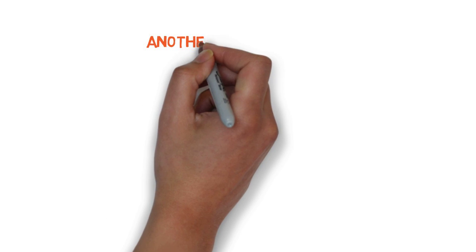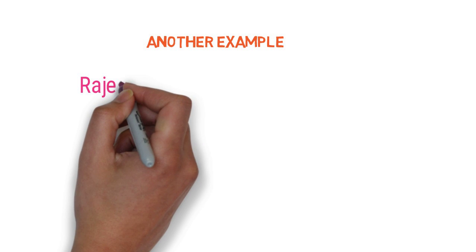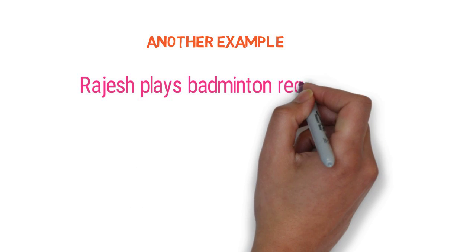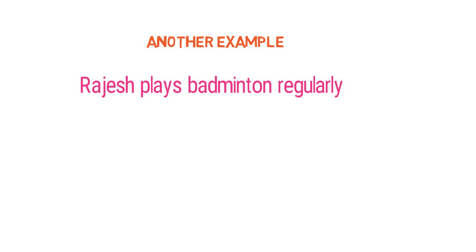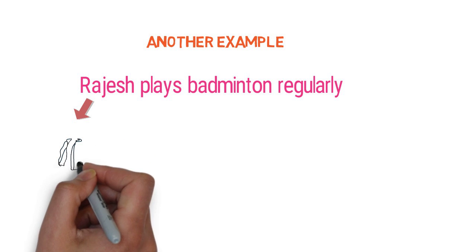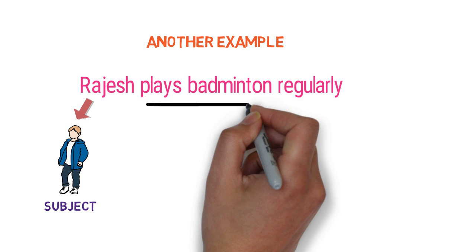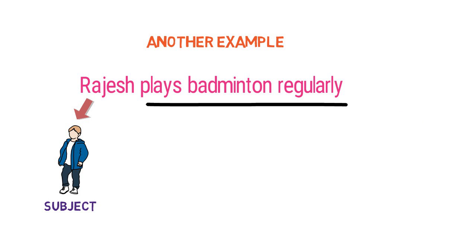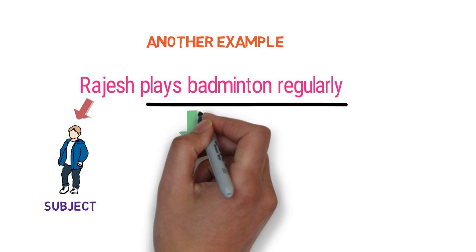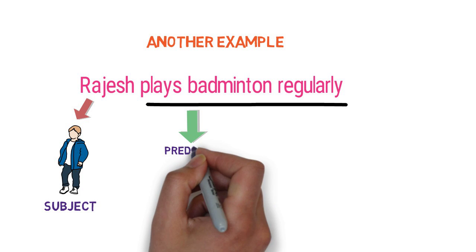Let's look into another example to make things even more clear. Rajesh loves playing badminton regularly. Here, what is the sentence about? It is about Rajesh. So Rajesh is the subject here. And what does Rajesh play regularly? Rajesh plays badminton regularly. So plays badminton regularly is the predicate here.